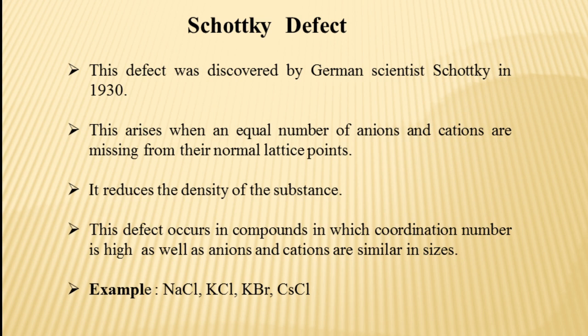Schottky defect was discovered by a German scientist Schottky in 1930. This defect arises when an equal number of anions and cations are not present at their normal positions — they are missing from their positions. Because the number of ions in the ionic crystal is reduced due to this defect, it reduces the density of the ionic crystal.